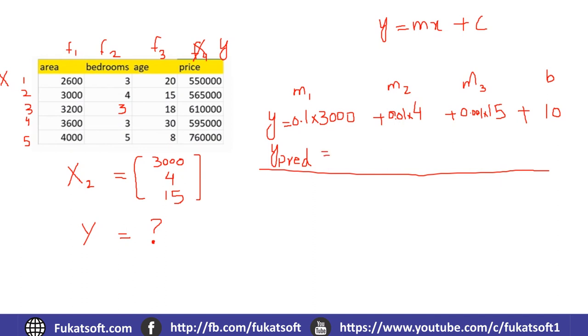And here we have the actual value Y. We will see the difference in order to check our error rate. Y error equals Y2 minus Y predicted. This is how we determine the value of Y. I hope that's clear for you.